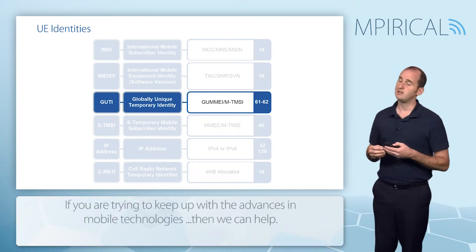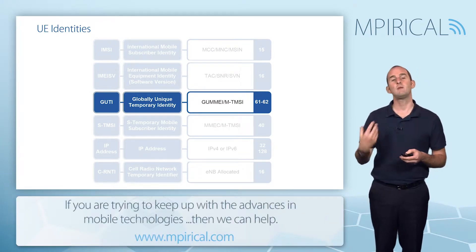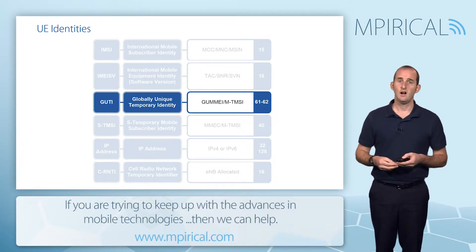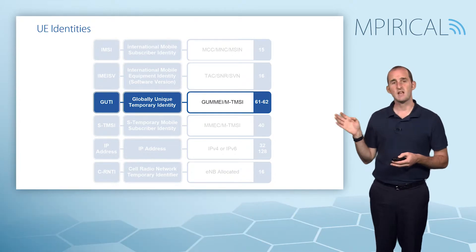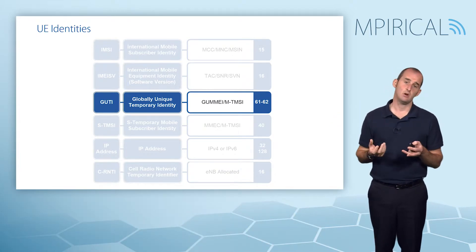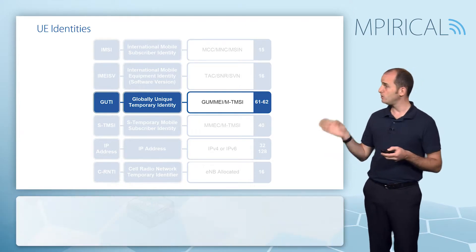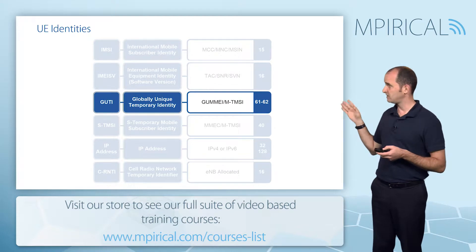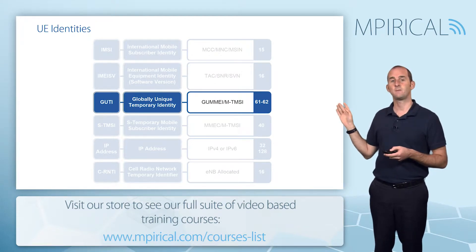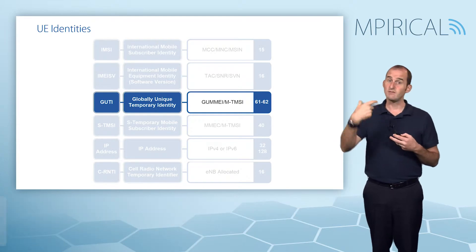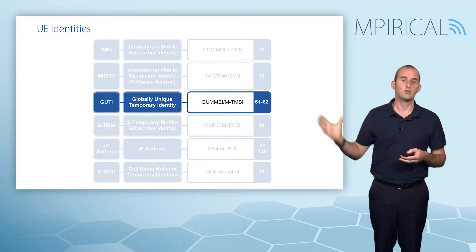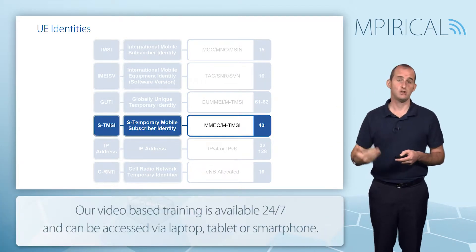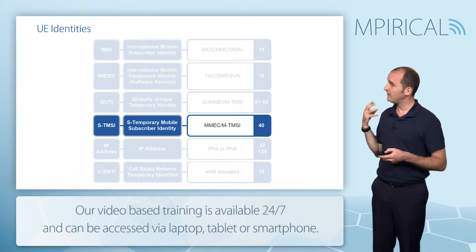So instead of using the IMSI, we use a temporary ID termed the Globally Unique Temporary Identity (GUTI), which is set by the MME when you attach to the network. The GUTI is a relatively long identity — it's between 61 and 62 bits. To reduce the number of ones and zeros being sent across the air interface, we can use a shorter version called the S-TMSI.